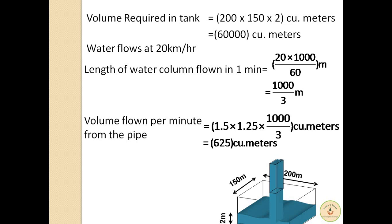So in how much time will we get 60000 cubic meters? We can simply divide to get the answer, i.e. 60000 divided by 625 giving us 96 minutes. Thus water level rises to 2 meters in the tank after 96 minutes with the given dimensions of the pipe and the tank.